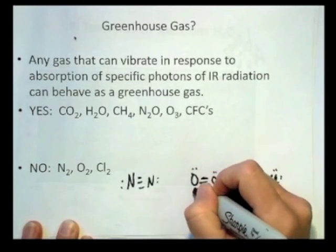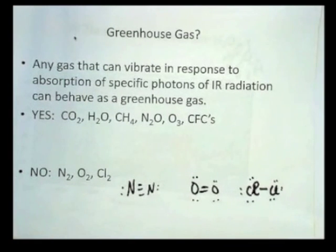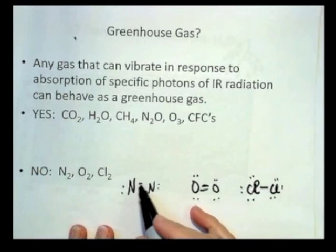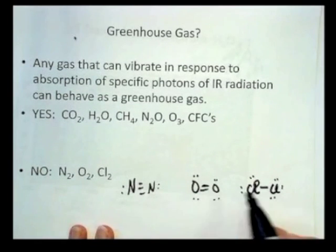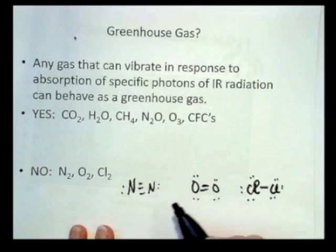You have to have a change in the overall electron distribution of the molecule upon the infrared absorption. The vibration has to change the overall electron distribution. And so in the case of these little diatomic molecules, they are not only diatomic, they're linear, but they're symmetric.